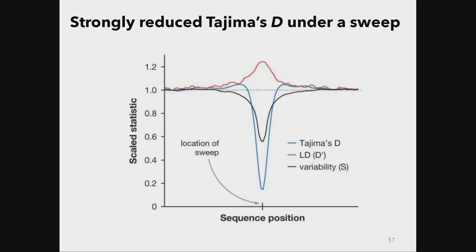Here we see that Tajima's D is strongly reduced — negative — under a selective sweep. On this plot, the blue curve shows D dropping at the location of the selective sweep, while the solid line showing pi or Watterson's theta also dips, indicating reduced variability. This localized dip in D becoming negative is quite indicative of a selective sweep — though not proof, since expansion after a recent bottleneck could also produce this pattern. We also often see increased linkage disequilibrium around the site of a sweep.